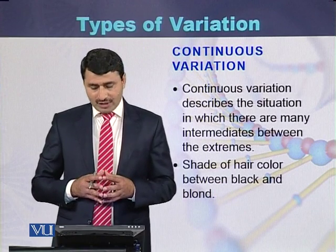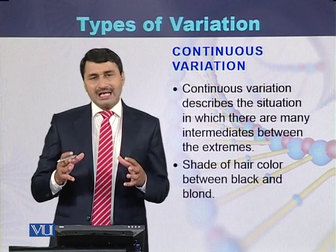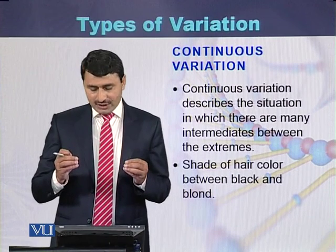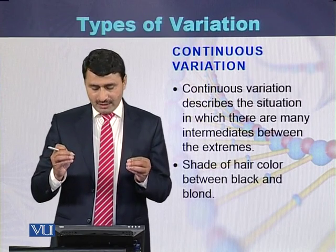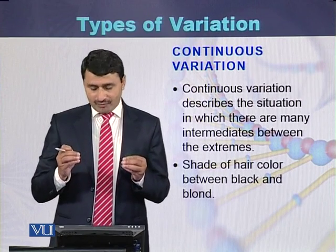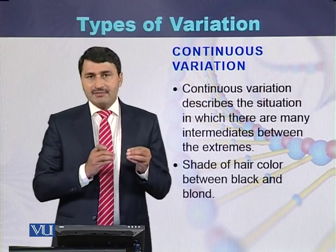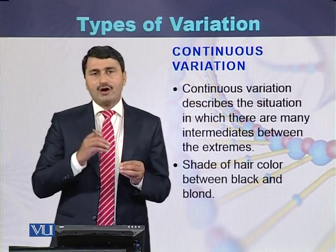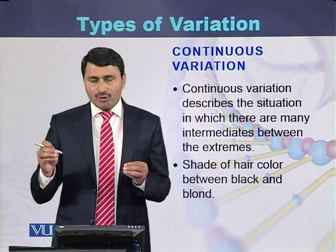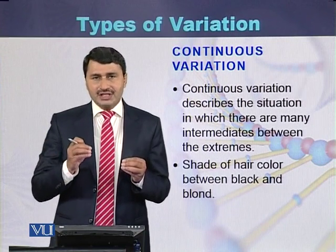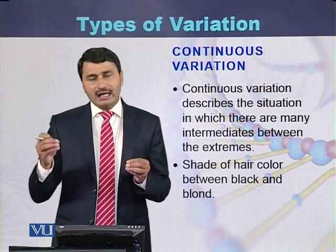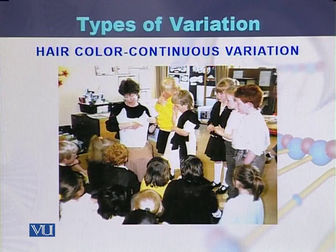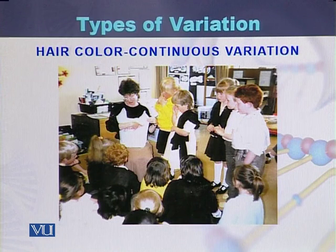Continuous variation describes a situation in which there are many intermediates between two extremes. For example, looking at shades of hair color, on one hand there is black and on the other hand there is golden or brown, but there are many different shades between these two extremes. Hair color is a classic example of continuous variation.